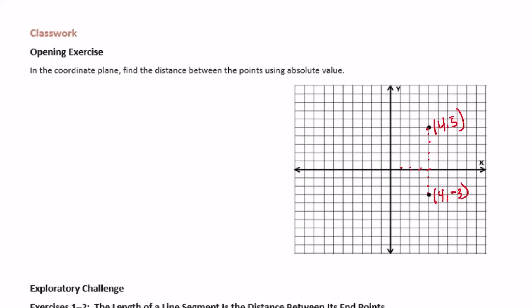Now their x-coordinates are the same. It'd be simple to just count between here and here, but it wants us to find the distance using absolute value, so that's why I'm taking a different approach. They have the same x-coordinate, 4.